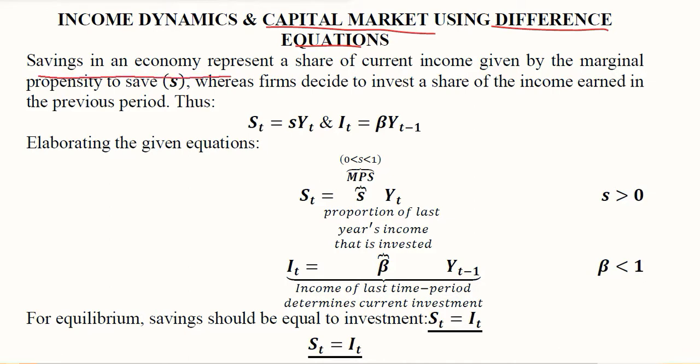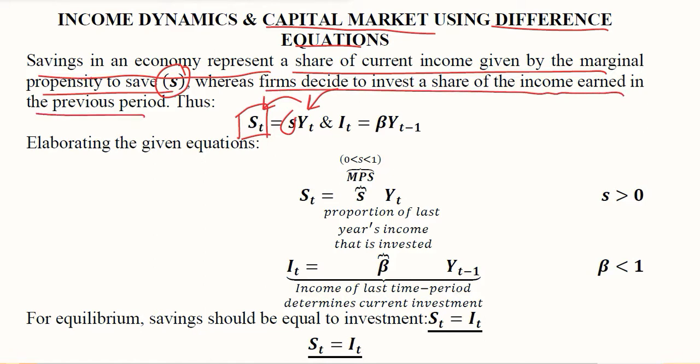Savings in an economy represents a share of income given by the marginal propensity to save, this is small s, which is a certain share of the national income considered as saving. Whereas firms decide to invest a share of their income earned in the previous period.